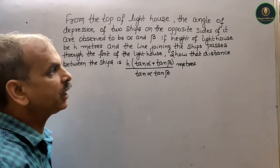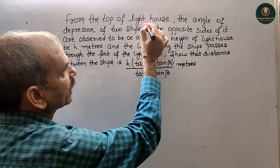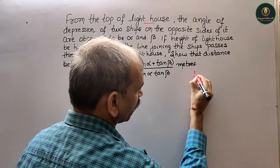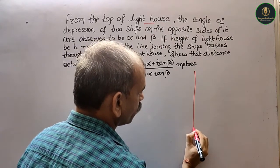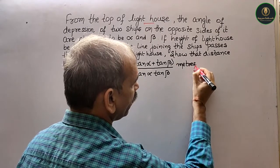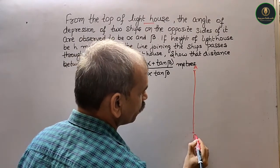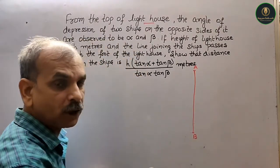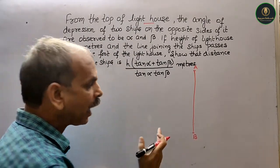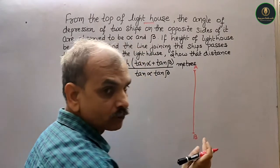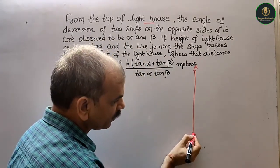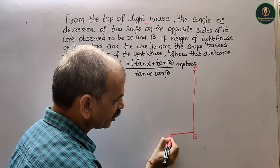First, we make a figure. So this is your lighthouse. This is your A and this is your B. There are two ships on opposite sides of this lighthouse. This is your sea level.